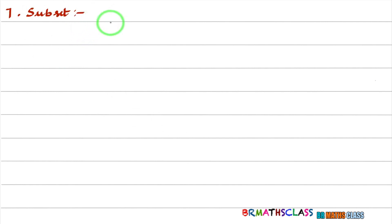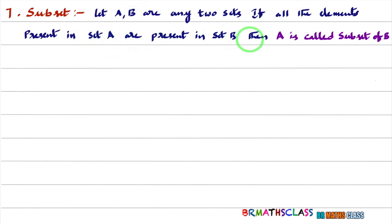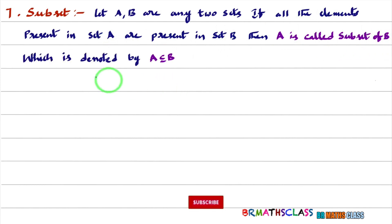We will learn the definition of subset, a few examples to understand subset, and five important points related to subset. Let A and B be any two sets. If every element present in set A is also present in set B, then A is called a subset of B, which is denoted as A ⊆ B.